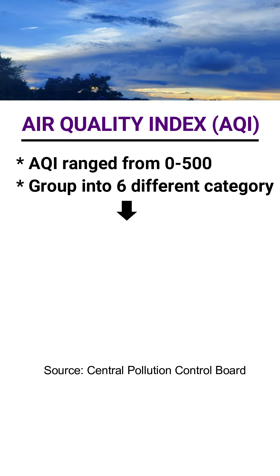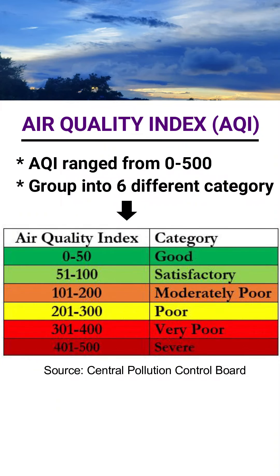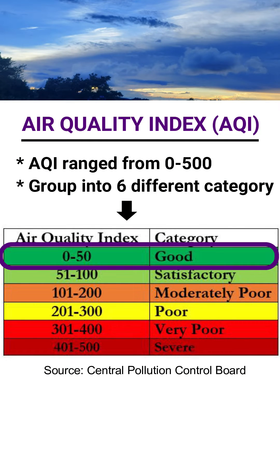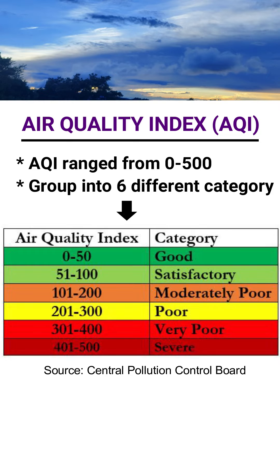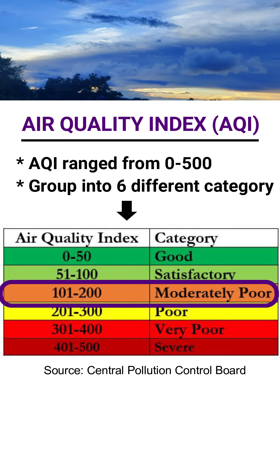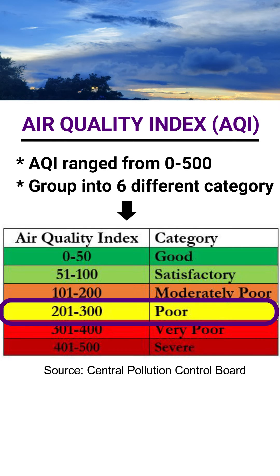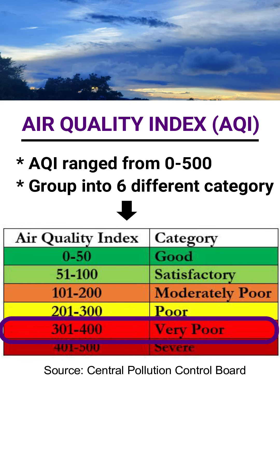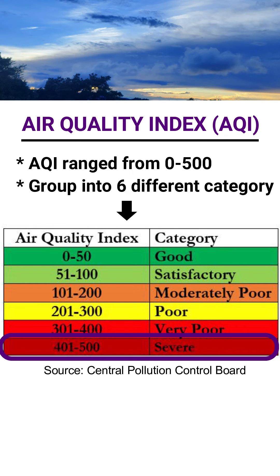First, if the calculated AQI value of an area falls between 0 to 50, this signifies good air quality. If the AQI value falls between 51 to 100, it means air quality is satisfactory. 101 to 200 means air quality is moderately poor. 201 to 300 means air quality is poor. 301 to 400 means air quality is very poor. And between 401 to 500, it means ambient air quality is severely polluted.